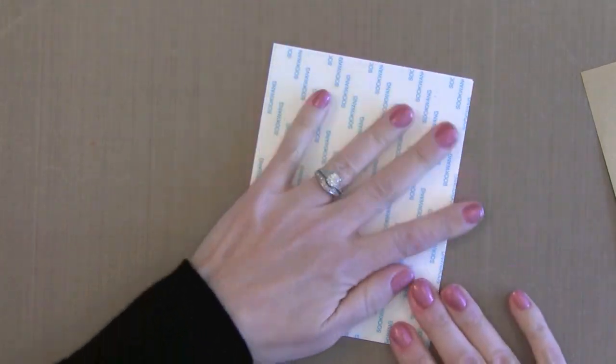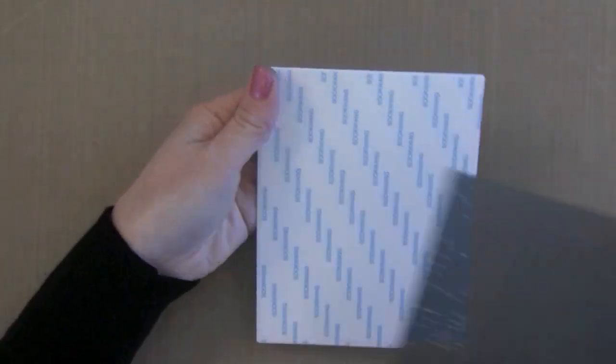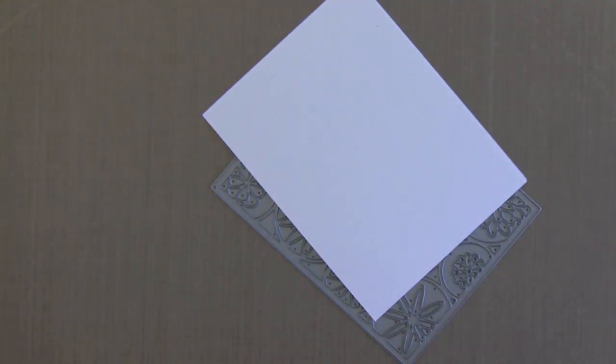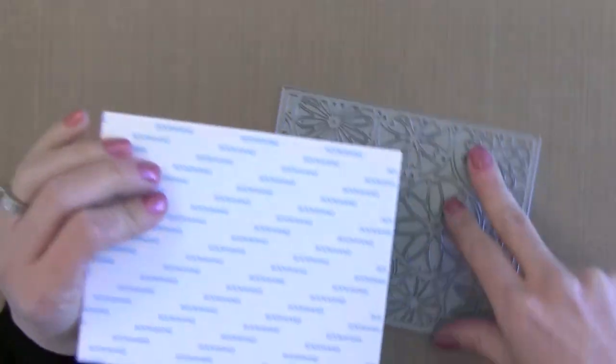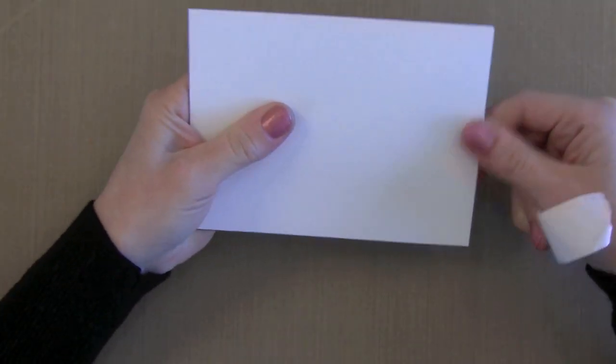Now I have a background die cut from Memory Box. It's got lots of detail to it. This is about as complex as a background die can be. So if I can do it with this complex of a background, we could probably do this with pretty much any kind of background die.